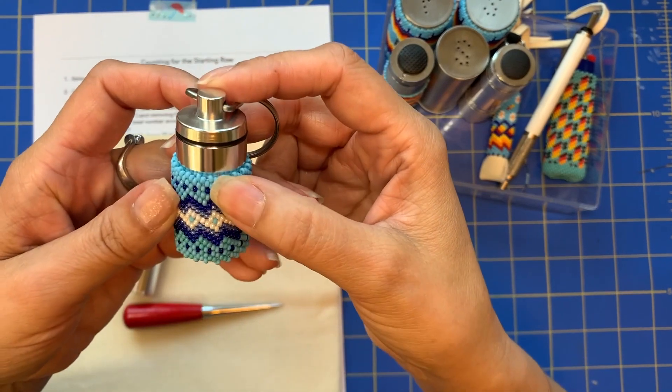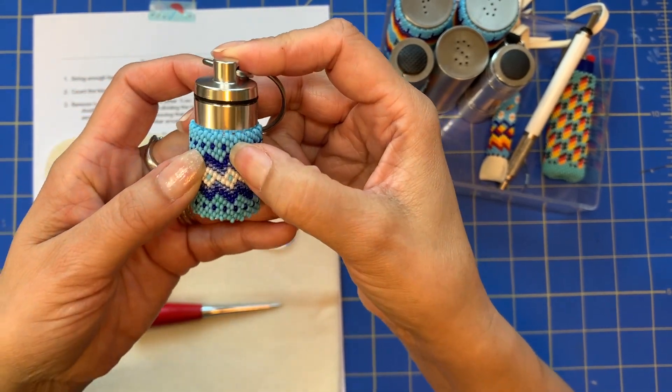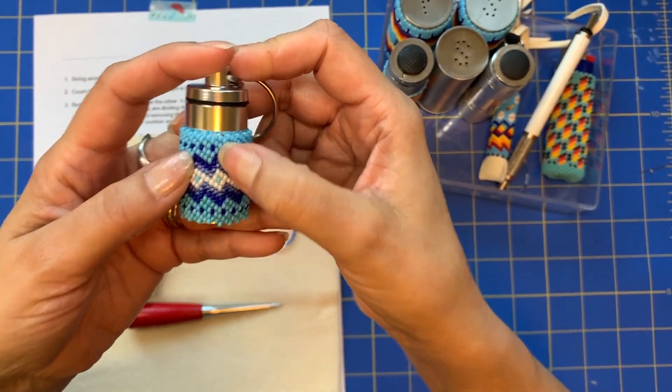Now why does it need to be a number divisible by six? Well, if you want to do a pattern like a chevron, it repeats every six beads.